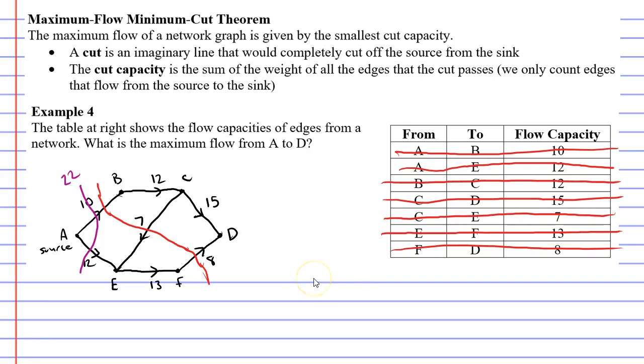Now remembering that D is our sink, and I should write that down, sink. This red line, this red cut, has a source side and a sink side. So I'm going to draw in green. And if we look at this edge of 10, it goes in this direction. It's going from the source side through the red line towards the sink side.